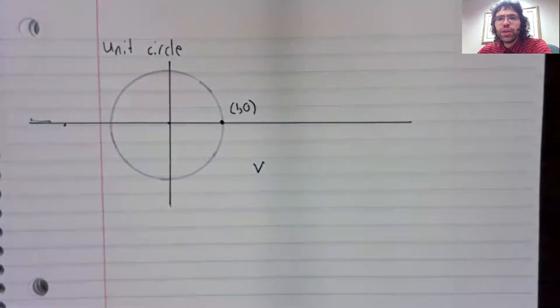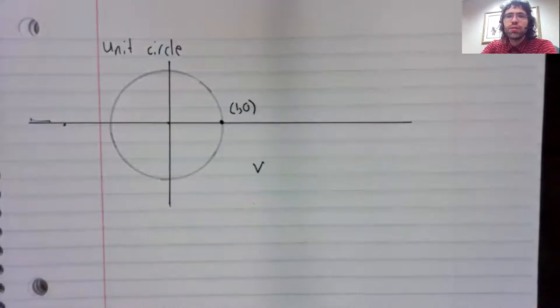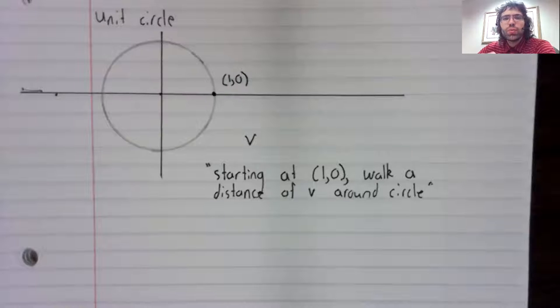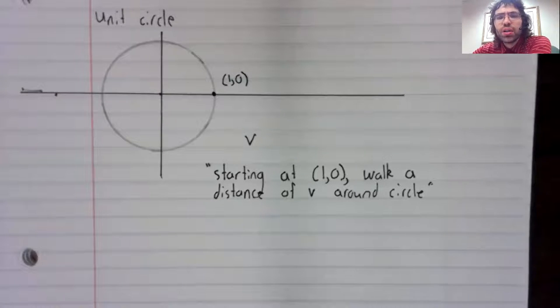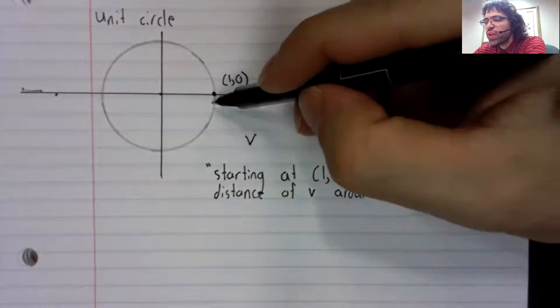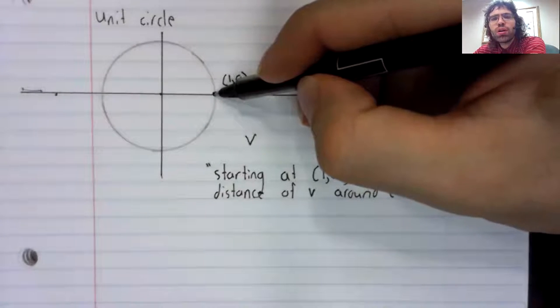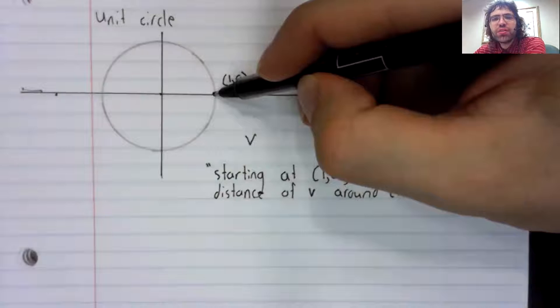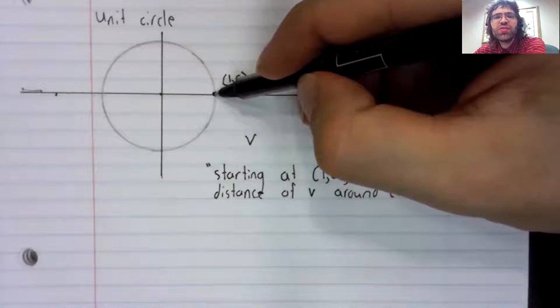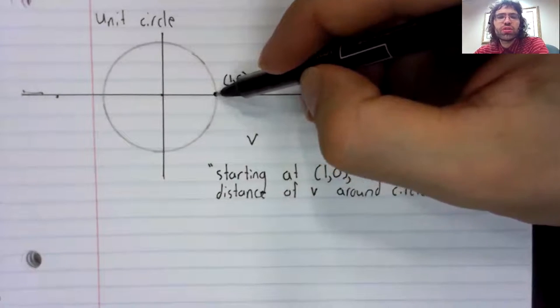We have a number V. This is a little informal, but I hope it's clear. Starting at this point, walk V units—a distance of V around the unit circle.